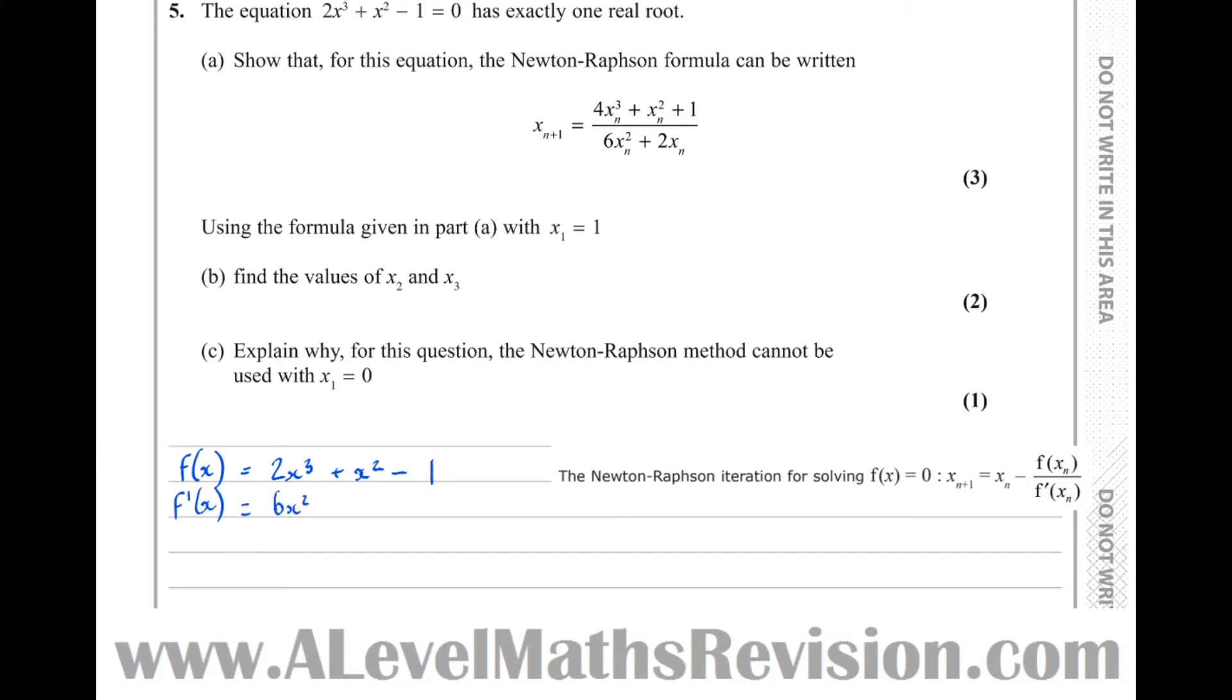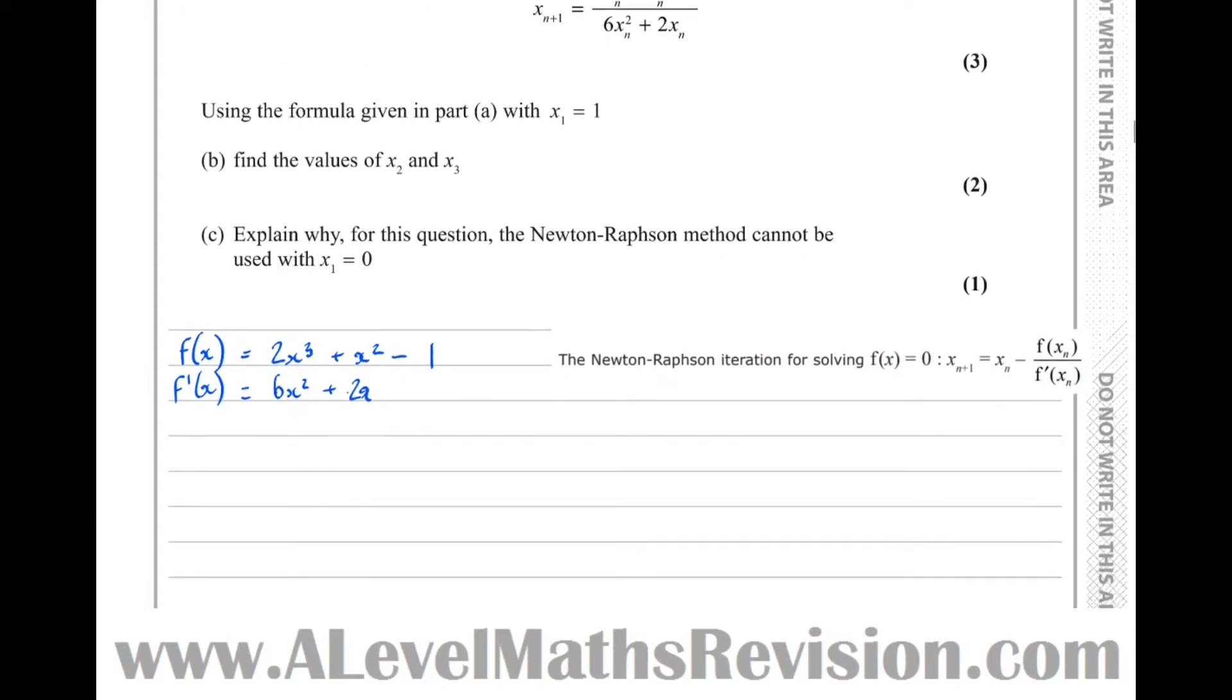So we've got f(x) equals 2x cubed plus x squared minus 1, which means the differential of that, f dash x, is 6x squared plus 2x. Therefore, the Newton-Raphson formula is xn+1 equals xn take, so on the top we've got f(xn), which is 2xn cubed plus xn squared, take 1.